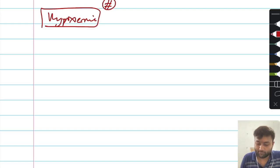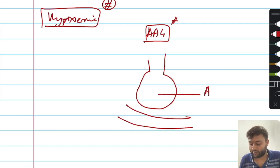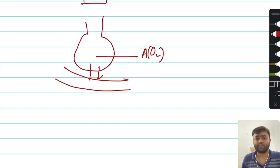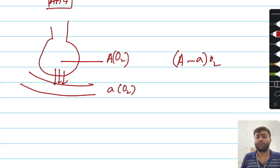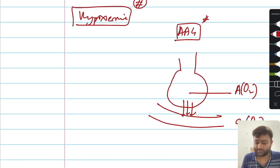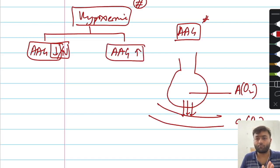In hypoxemia evaluation, you should consider the alveolar to arterial gradient, or AAG. When you inspire air, the alveoli receive oxygen — this alveolar oxygen diffuses through the respiratory membrane, enters the blood, binds to hemoglobin, and becomes part of the arterial oxygen concentration. Because air is moving and diffusing inwards, there is normally a gradient between the alveoli and the arterial blood — this is the AAG. The difference between these two values helps classify hypoxemia into two basic types: where the AAG is normal or decreased, and where the AAG is increased.